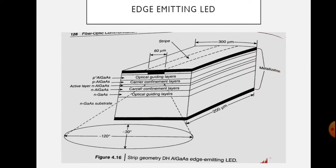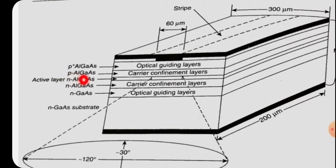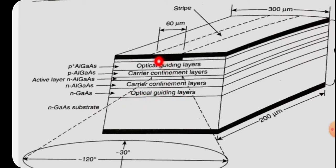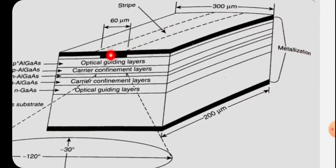This is the basic structure of an edge emitting LED. We know that LED is a PN junction. Here also there is a PN junction. There is an active layer made up of aluminium gallium arsenide, and it is buried in between P-type aluminium gallium arsenide and N-type aluminium gallium arsenide layers, which act as carrier confinement layers. There is also a P-type aluminium gallium arsenide layer and an N-type gallium arsenide layer that act as optical guiding layers. Above this structure there is a stripe geometry, which provides effective coupling with the optical fiber.